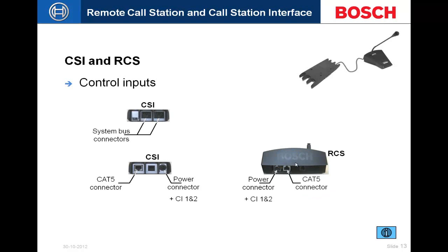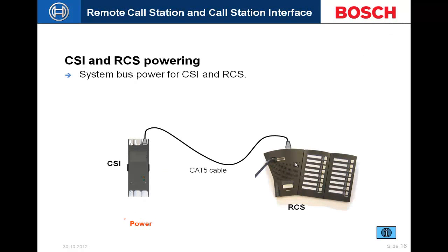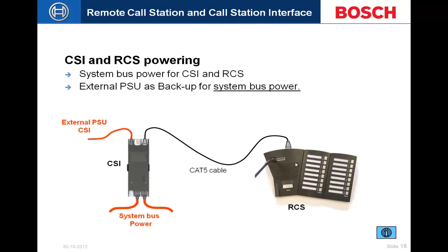On the rear of the CSR, there is a CAT5 connector, a power connector, and a small RJ12 connector used only as a factory programming port. On the CSI, two system bus connectors give the ability to insert it within a supervised ring topology fiber system. An external power supply can be connected to the CSI, and an internal jumper selects external power for the remote call station.